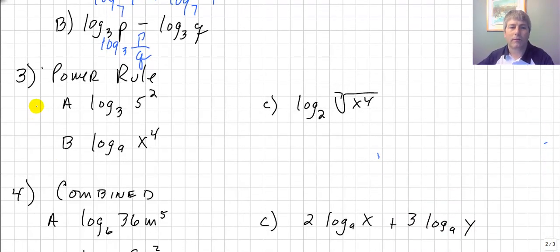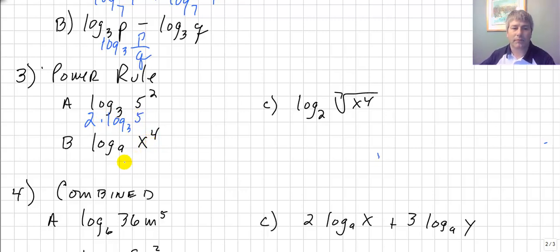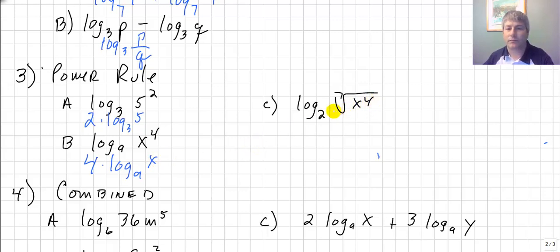Our power rule — this is my favorite because the exponent just comes down in front of the log. So log base 3 of 5 squared becomes 2 times log base 3 of 5. And log base a of x to the fourth: bring the 4 down, it becomes a multiplier — 4 times log base a of x.